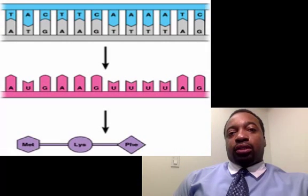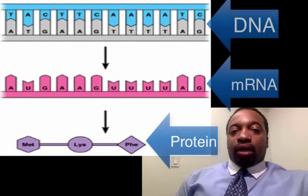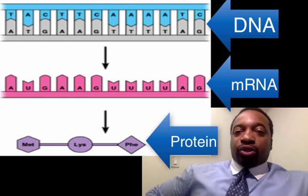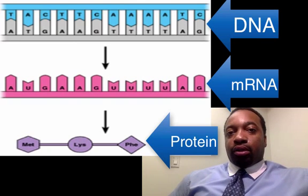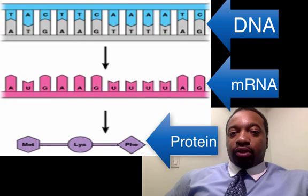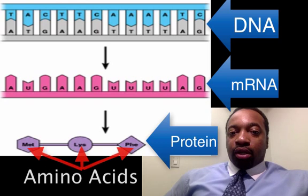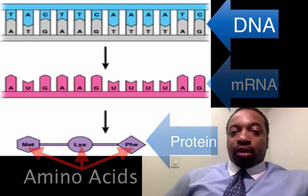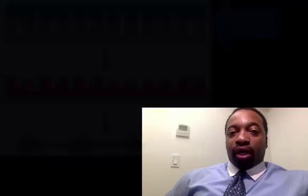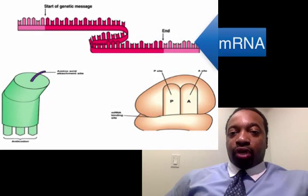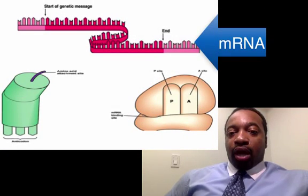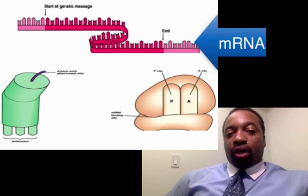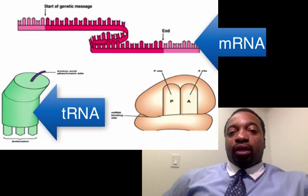Let's look at this process in more detail and introduce the major players in making proteins. Proteins are made of amino acids. Our star player is the DNA, and then we have our mRNA message — a single strand message. We also have another kind of RNA called tRNA, or transfer RNA.